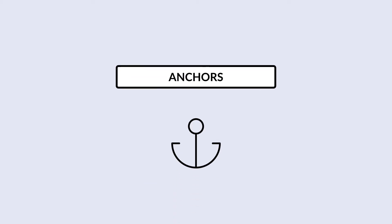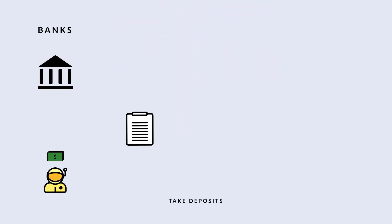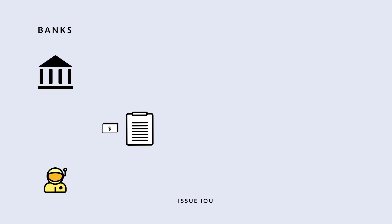Anchors act as a bridge between outside currencies and the Stellar Network. An anchor can be thought of as a bank. Banks take your cash deposit, issue you an IOU in the form of a balance on your account with that bank, which you can see in their database through a website or an app, and honor withdrawals from your account by giving you cash.